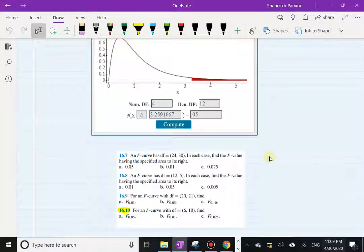So in exercise number 10 it reads: for an F curve with degrees of freedom 6 comma 10, that's 6 for numerator, 10 for denominator. So be careful—if you switch those when you put them into StatCrunch you're going to get a different answer and the wrong answer.